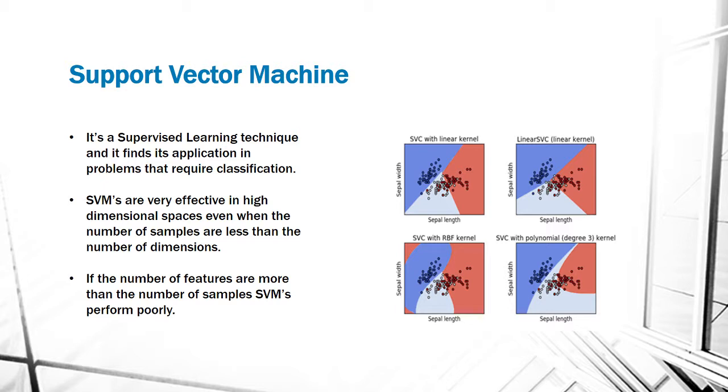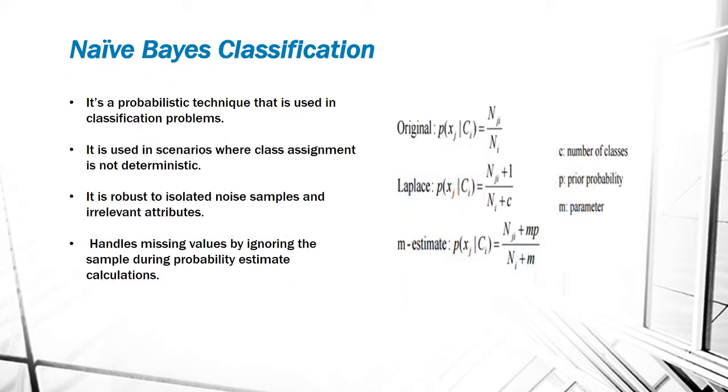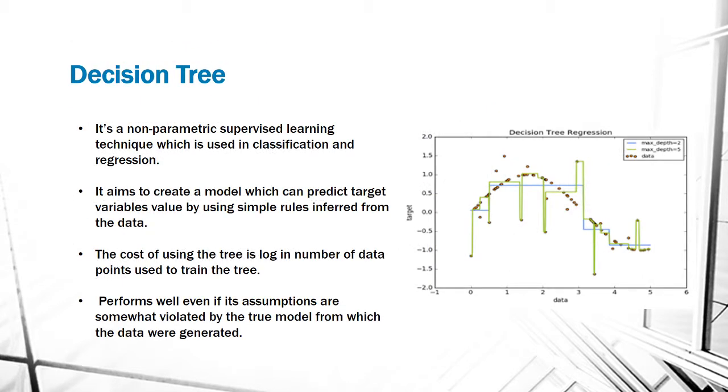Naive Bayes classification is a probabilistic technique that is used in classification problems. It is used in scenarios where class assignment is not deterministic. It is robust to isolated noise samples and irrelevant attributes. It handles missing values by ignoring the sample during the probability estimate calculations.